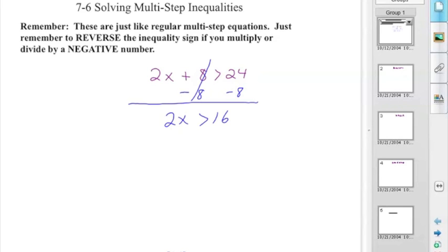2x is greater than 16. Now, 2x is greater than 16. It's a multiplication equation. We divide both sides by 2, and the 2s on the left cancel out, so we have x is less than 8. I'm wondering if you notice anything wrong with this. I hope you do, because it's actually not x is less than 8. It's x is greater than 8.